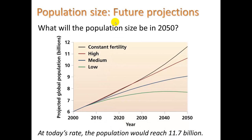What about future projections? We know right now that the population is about 7 billion. If the current fertility rate — the number of children being born to every woman alive — continues at the same rate it is today, then we would expect the population to be about 11.7 billion by 2050. However, as countries become more developed, the number of children born to each woman declines. Our middle model shows that population will stabilize around 9 billion. Time will tell.